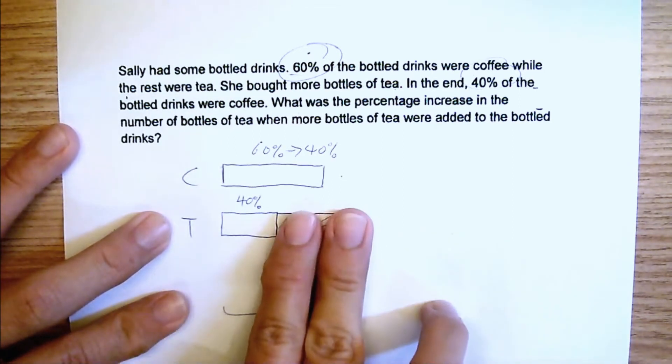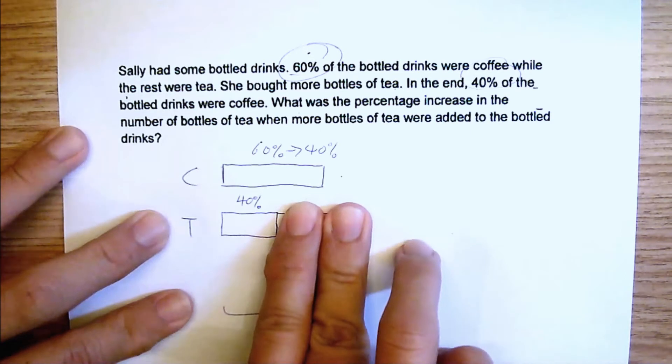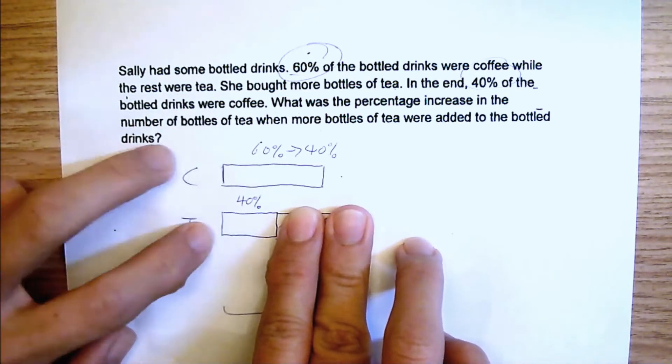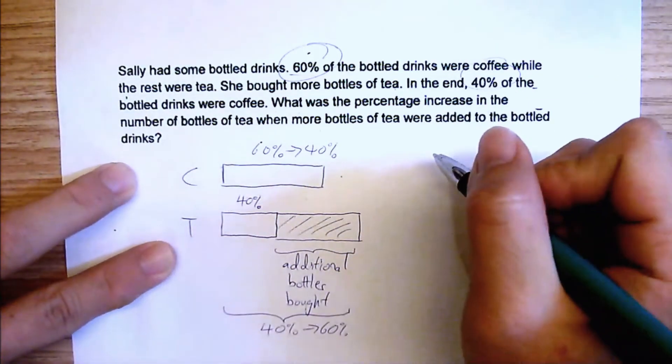Give it a figure. Originally, this is the amount. This is correct. Originally, coffee had 60%, tea had 40%. Now I'm going to assume. So this is called an assumption method.